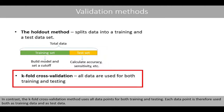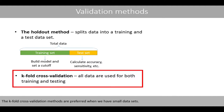In contrast, the K-fold cross-validation method uses all data points for both training and testing. Each data point is therefore used both as training data and as test data. K-fold cross-validation methods are preferred when we have small datasets.